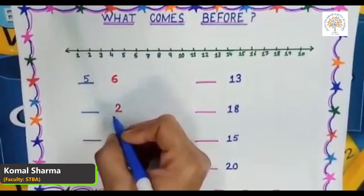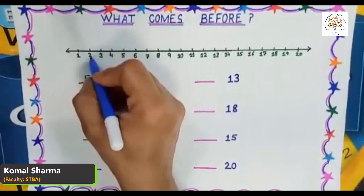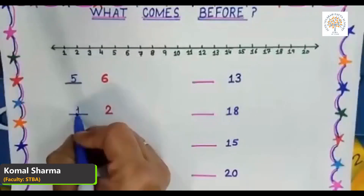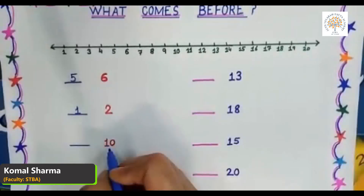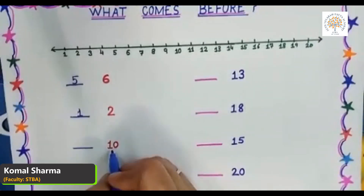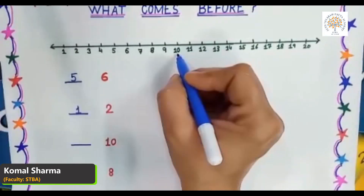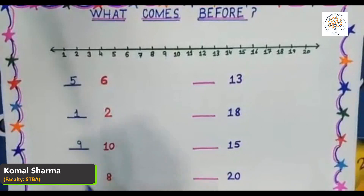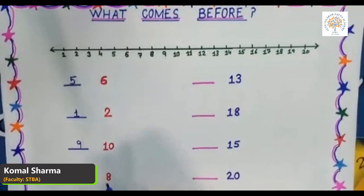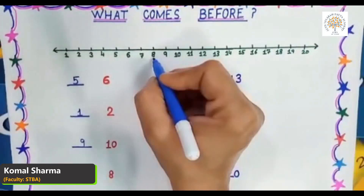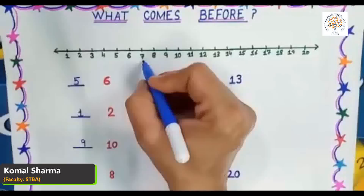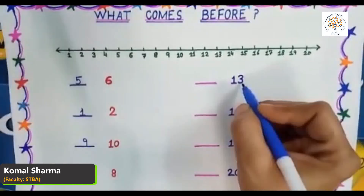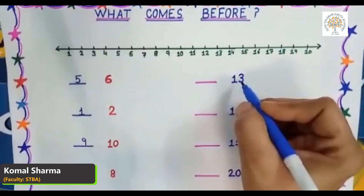Which number comes before number two? Look at the number line — here is number two, and what comes before number two? Yes, it is number one. Okay students, which number comes before number ten? Look at the number line — here is number ten, and what comes before number ten? Yes, it is number nine.